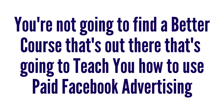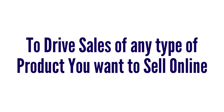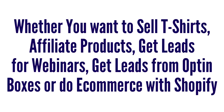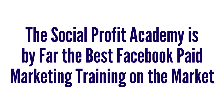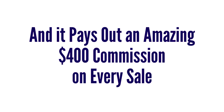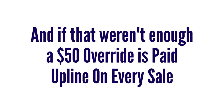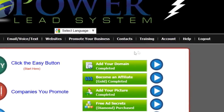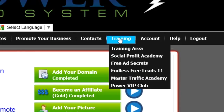Finally, for the last button, we have the Social Profit Academy. You're not going to find a better course that teaches you how to use paid Facebook advertising to drive sales of any type of product — whether you want to sell t-shirts, affiliate products, get leads for webinars, get leads from opt-in boxes, or do e-commerce with Shopify. The Social Profit Academy is by far the best Facebook paid marketing training on the market, at an unbelievably low price of $497 one time, paying out an amazing $400 commission on every sale, plus a $50 override paid upline. Access it by hovering over Training, then clicking Social Profit Academy.